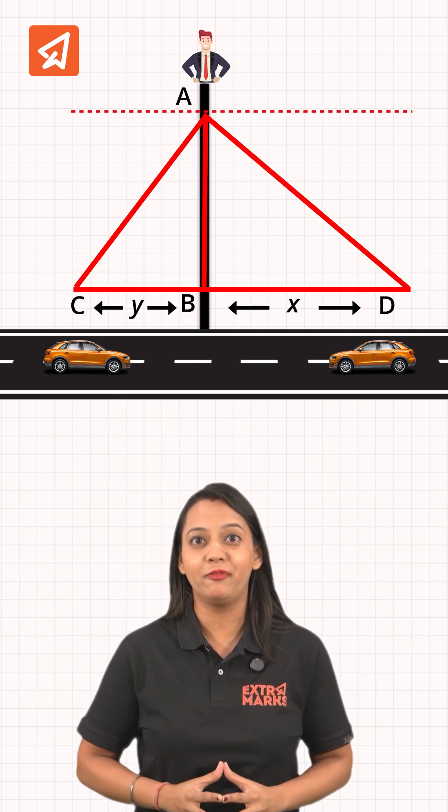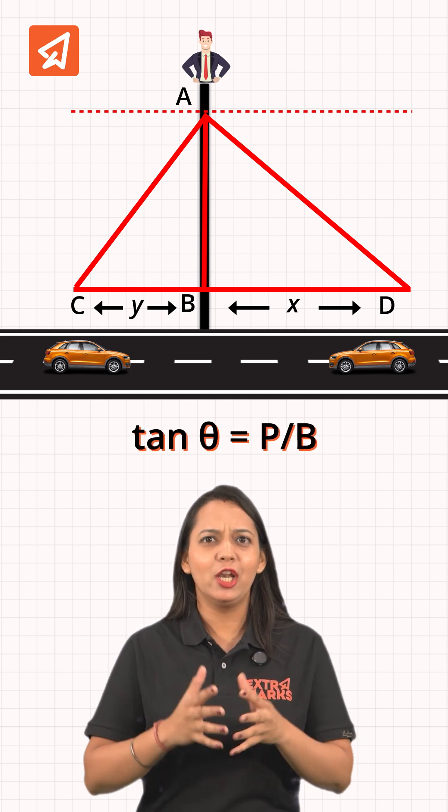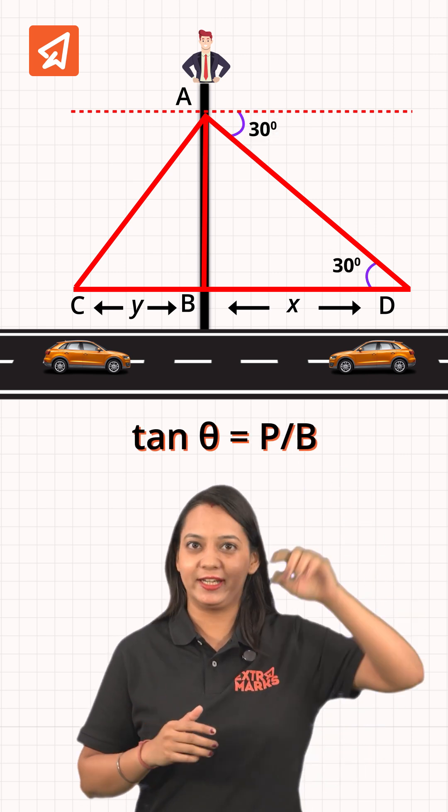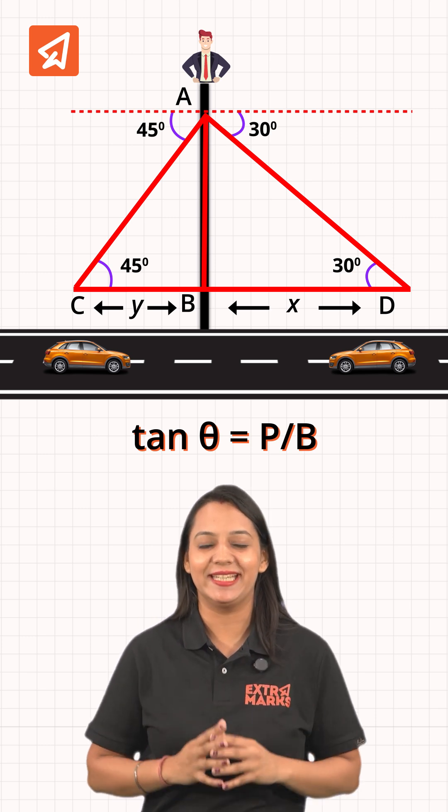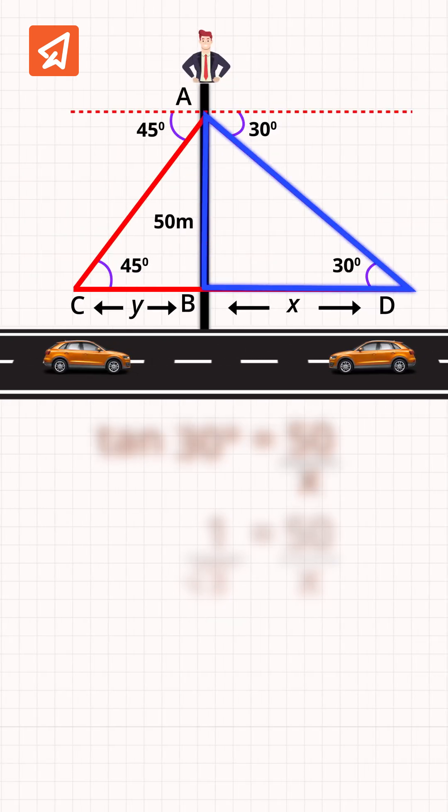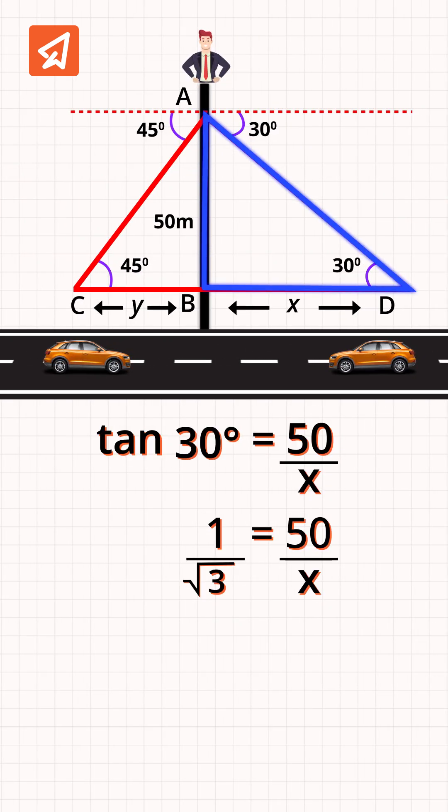Now, we know the concept of tan theta. The angle of depression here is 30 degrees, and here 45 degrees. Using the trigonometric ratio tan theta, for the first triangle, tan 30 degrees equals 50 by x. So we have the value of x as 86.67 meters.